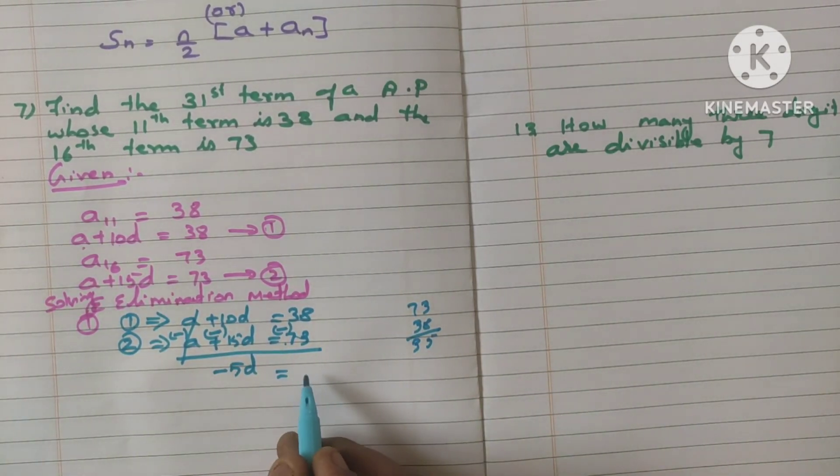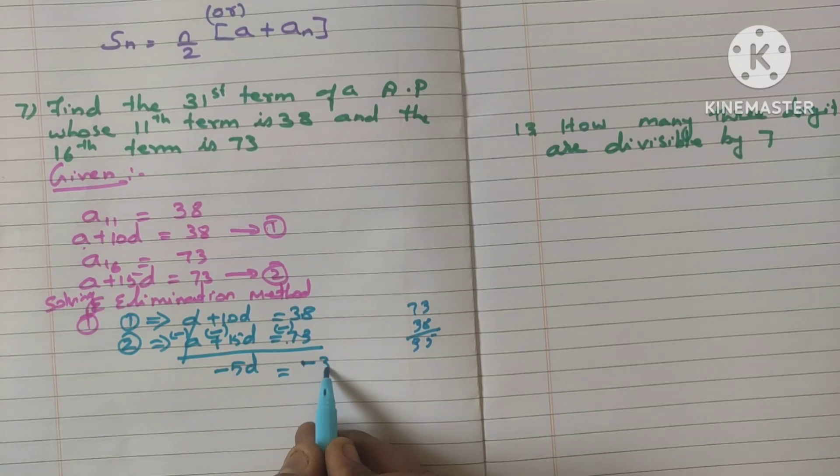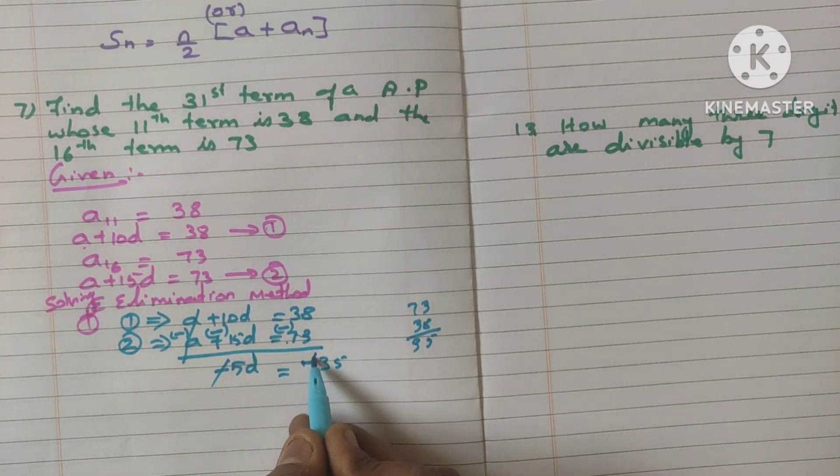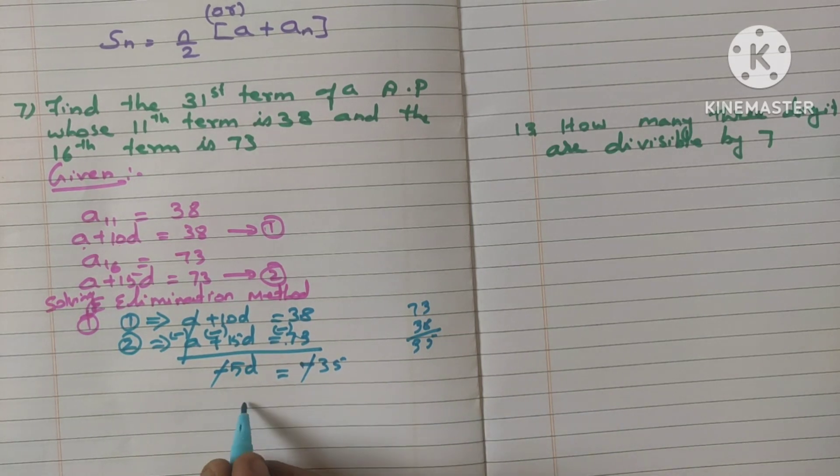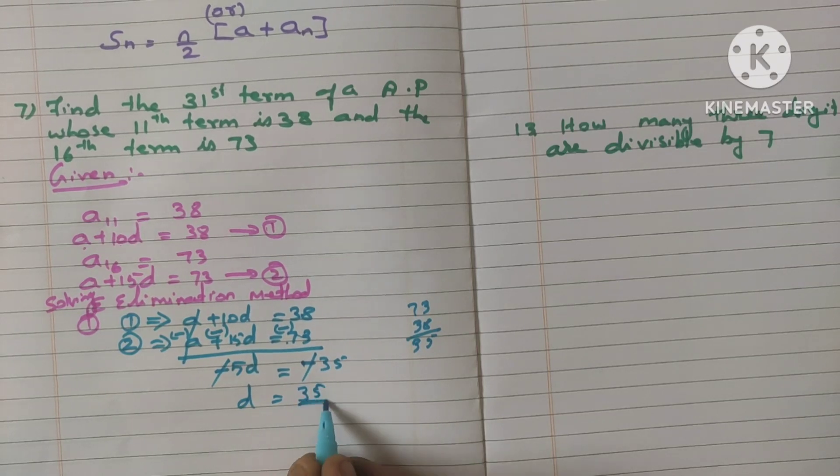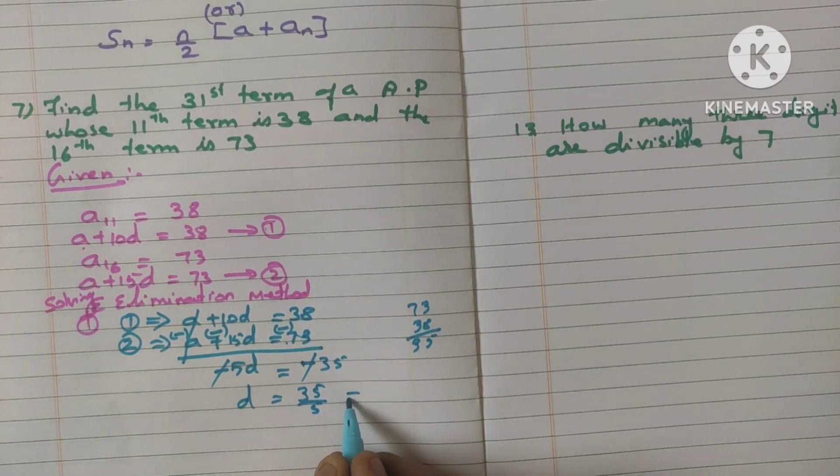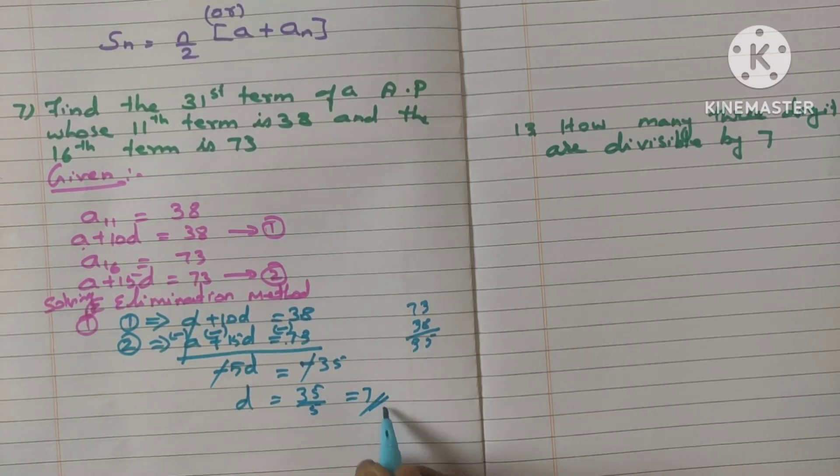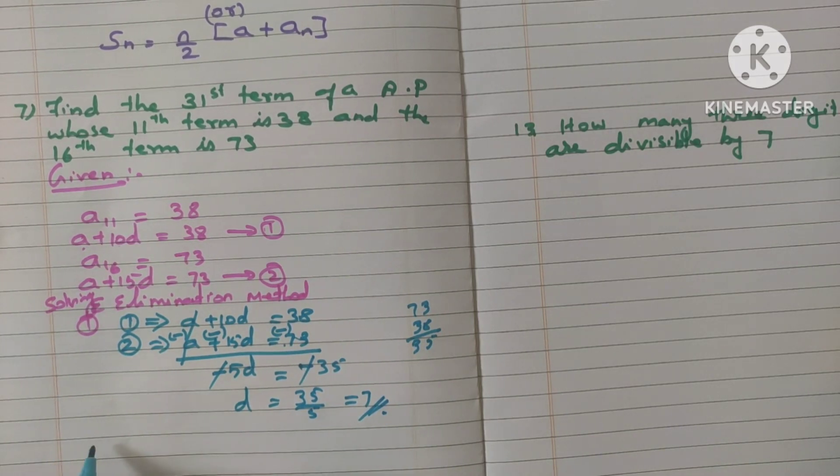35. So minus 35. See here, here also 1 minus sign. Here also 1 minus sign. Cancel that minus sign. Now D is equal to this multiplication 5 becomes as division 5. 35 divided by 5. What is D value? 7. So 7 we got. Therefore, D is equal to 7.